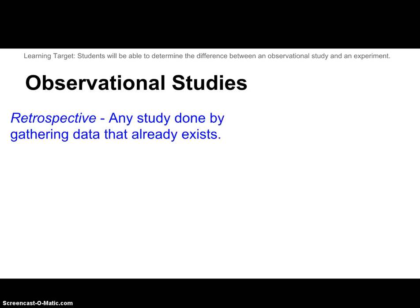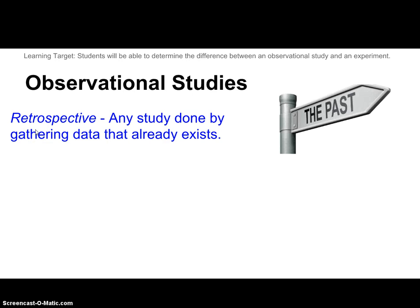Let's first talk about observational studies. There are two types of observational studies. The first is a retrospective study. The key part of this word is 'retro' — when you think of retro, you should think of the past. So this is any study that's done by gathering data that already exists. If there's data out there on the internet and you're trying to find something out, you're going to look it up, gather that data, and make some sort of study. A retrospective observational study is looking at stuff that already exists in the past.